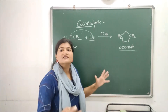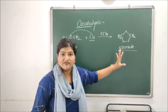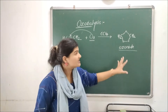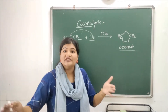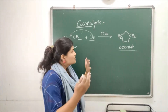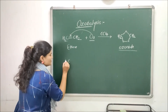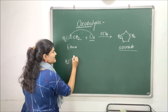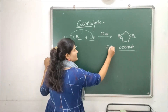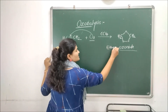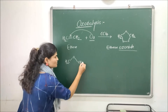Ozonides are extremely unstable — they are explosive compounds — so they will not be isolated. In the next step, we are going to break down or reduce this ozonide to form carbonyl compounds. I'll take that same ozonide, which will be referred to as ethene ozonide because it is formed from ethene.